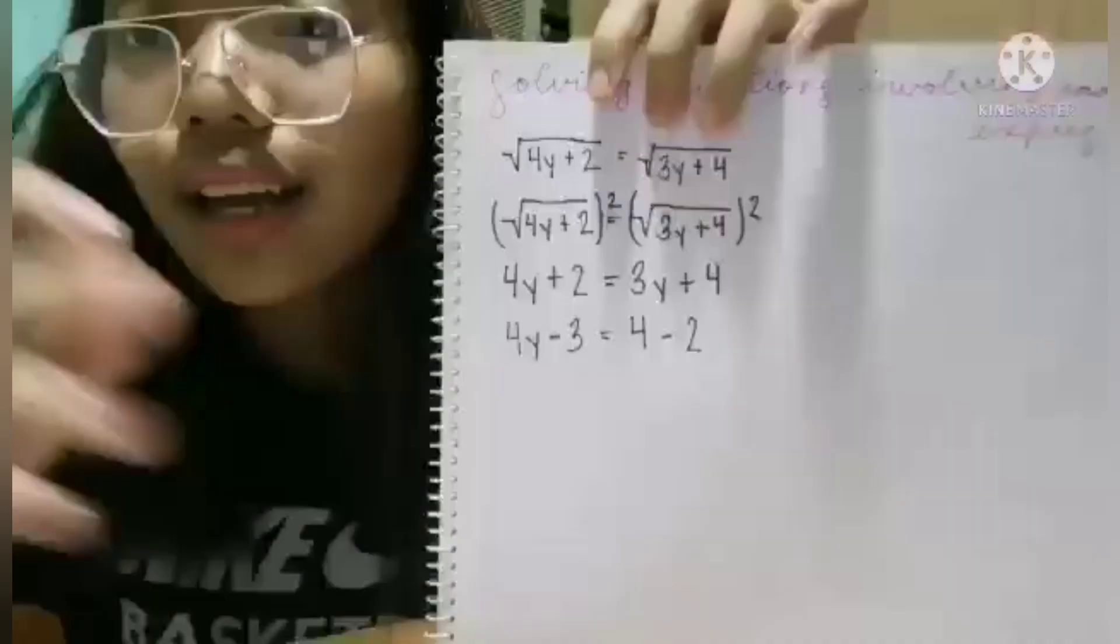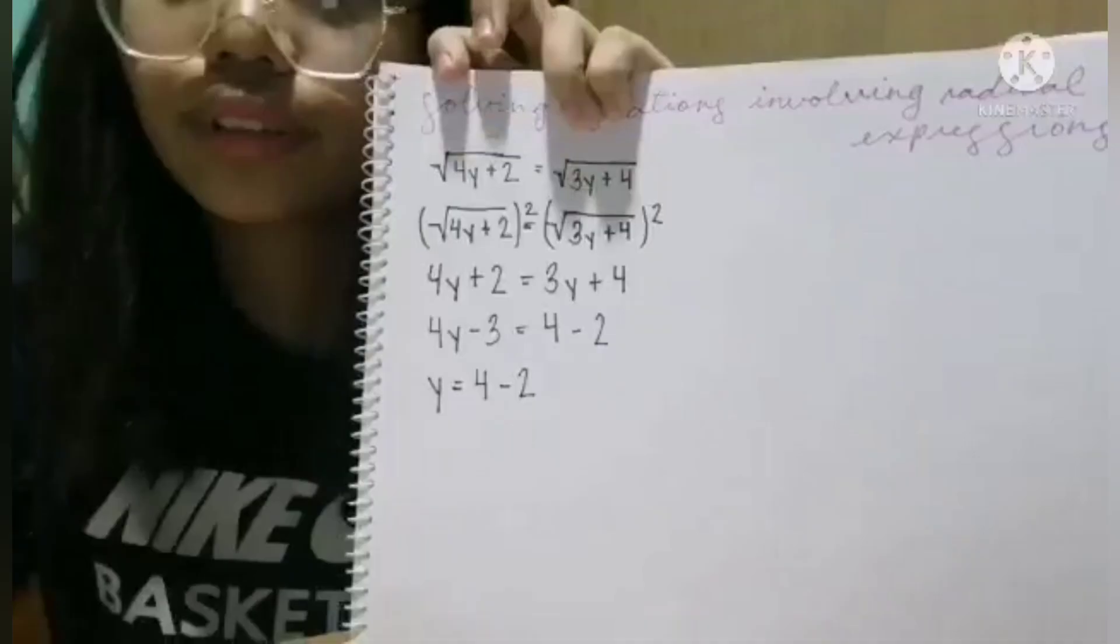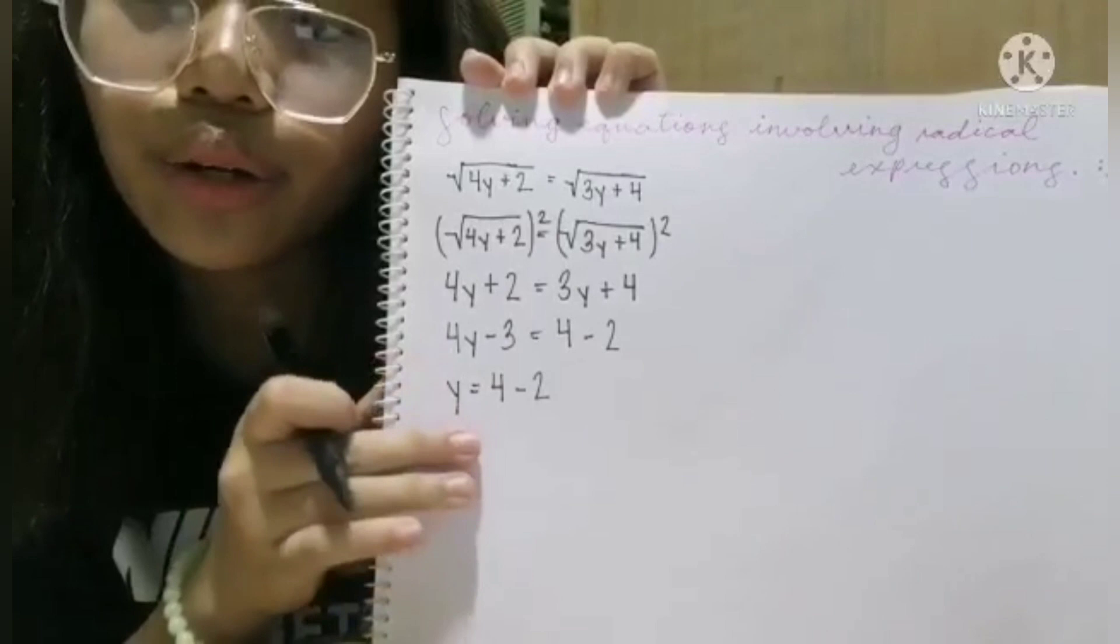Now, we have to subtract both these two expressions. So after subtracting 4y minus 3, we got 1y or y.